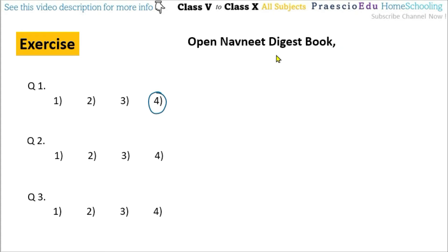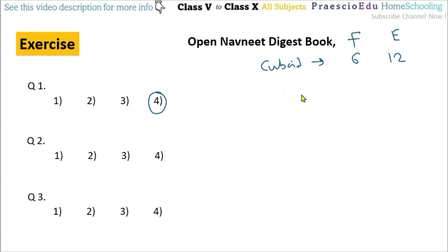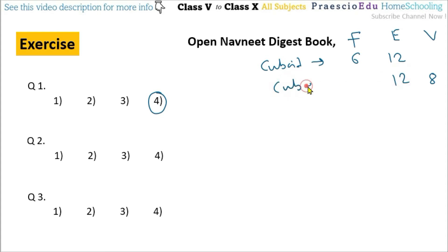Question number 2: By how much is the sum of the number of faces and edges of the cuboid more or less than the sum of the number of edges and vertices of the cube? A cuboid has 6 faces and 12 edges. For a cube, the vertices are 8, edges are 12, and faces are 6 — all the same values.